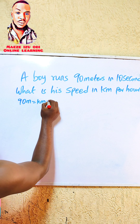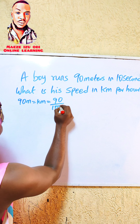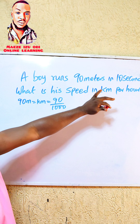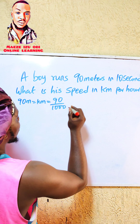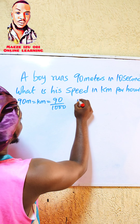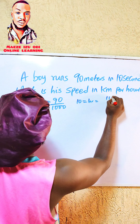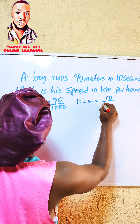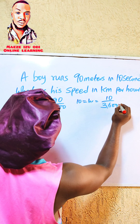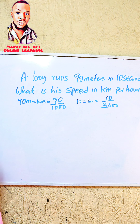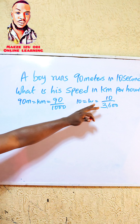So what I'm going to do is convert the distance to kilometers and convert the time to hours. When I convert the distance to kilometers it is going to change into a decimal or a fraction, and when I convert the time into hours it is also going to change into a fraction or decimal. Now let us solve it.